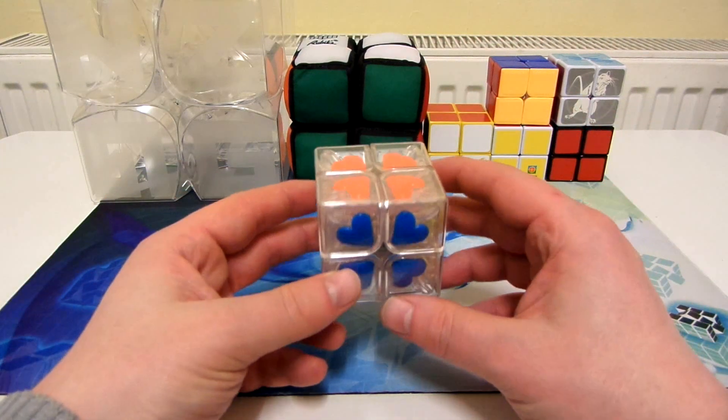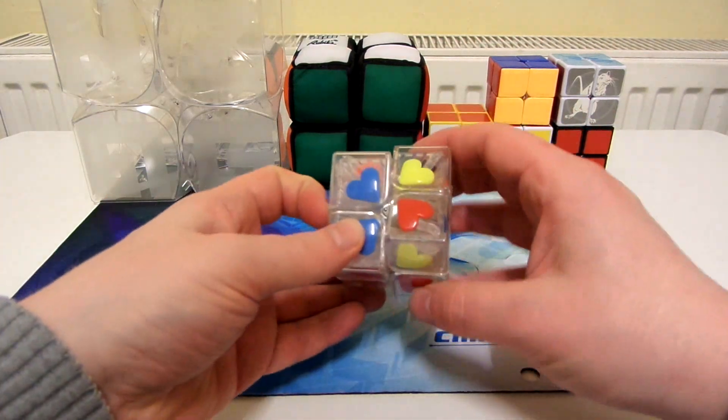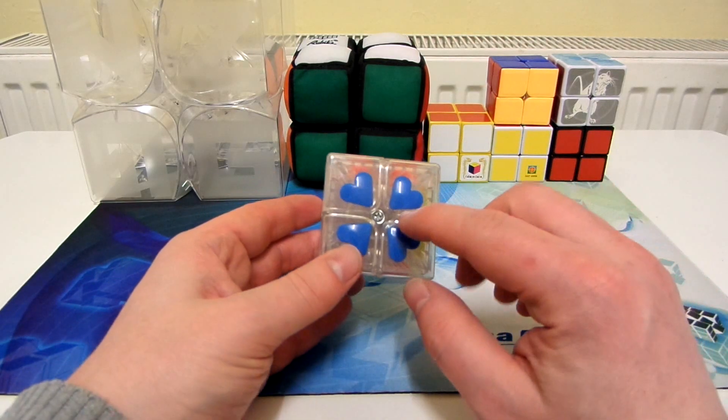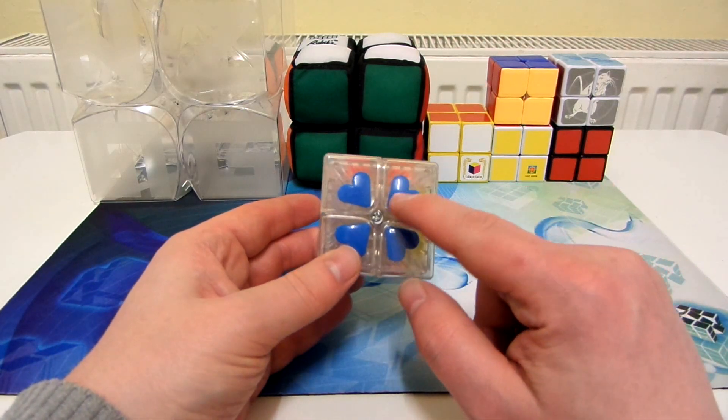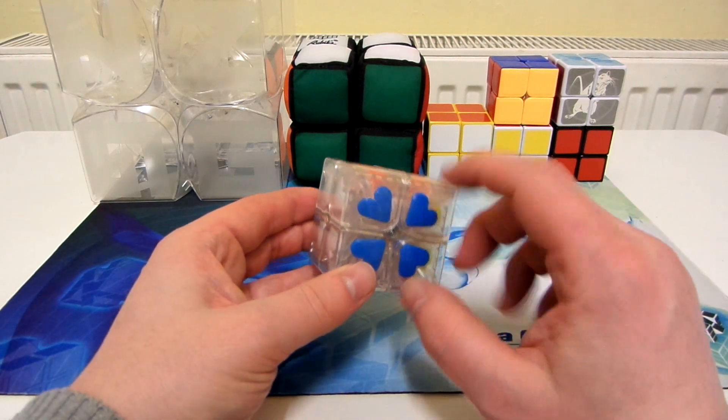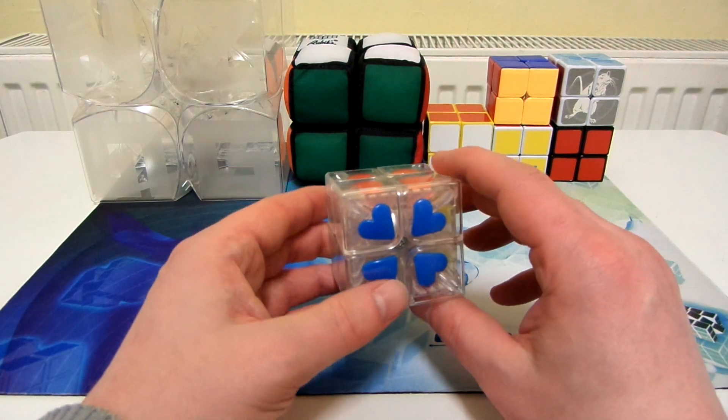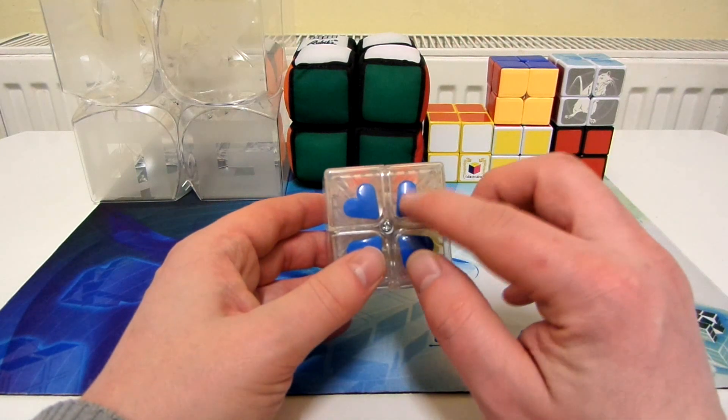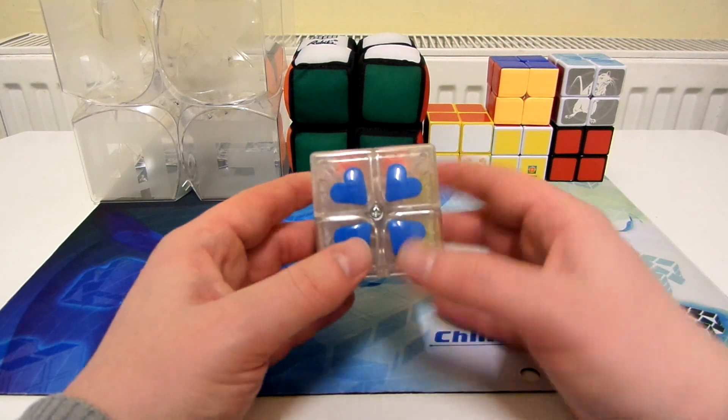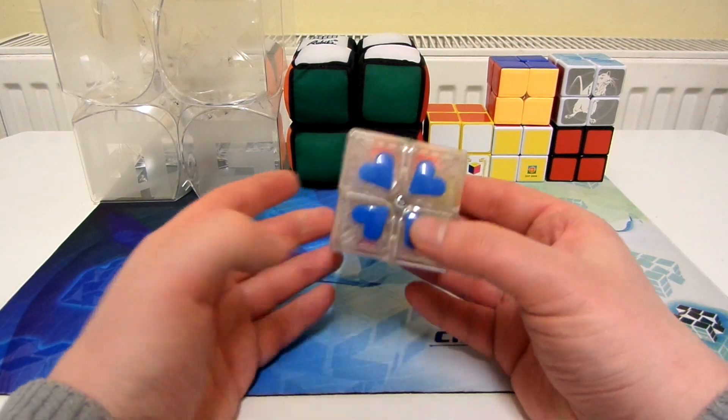Here we have a Fangshi 2x2. Again, feels really nice, and I just love the way it looks. You know, it's got like these hard tiles, but the tiles are actually stuck on the other side of the plastic, and I've never really seen that done on a cube before, so they kind of look as though they're inside the plastic, maybe they are actually inside the plastic, I don't know, but yeah, it's a really nice puzzle.